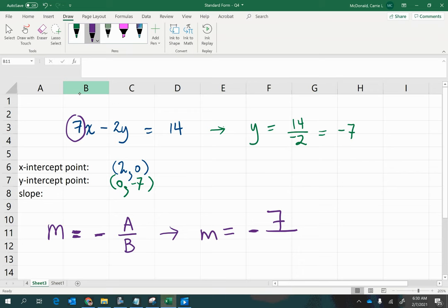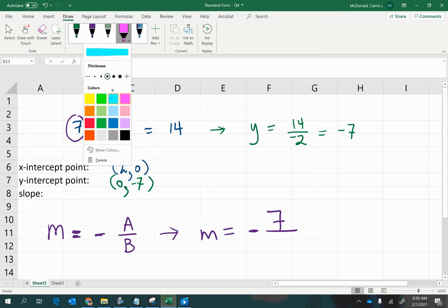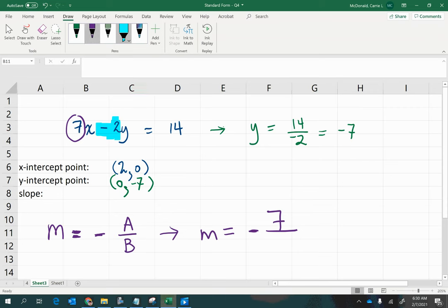Now, what is b here? Is it 2? No, it's negative 2. So you need to bring that negative 2 along. And so just this portion right here is negative 7 halves. And then you have another negative out front. And we know double negatives become positives. So we get the answer. The slope is equal to positive 7 halves.